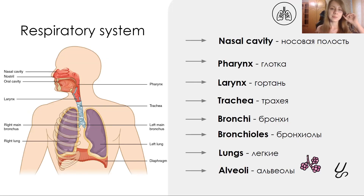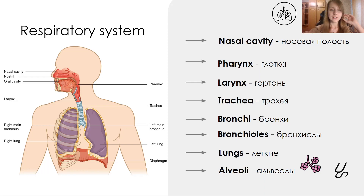The next system is the respiratory system. Respiration is an important function of our body. The process starts from our nose, then the nasal cavity. After that, air comes to the pharynx, then to the larynx and trachea. The trachea is divided into two bronchi — the left main bronchus and right main bronchus.